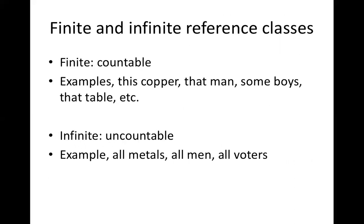Then we have another distinction between finite and infinite reference classes. The finite reference class is a class of countable items — examples: this copper, that man, some boys, that table, and so on. And then the infinite reference class is a class of uncountable items — example: all metals, all men, all booters, and so on.